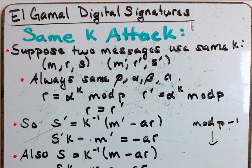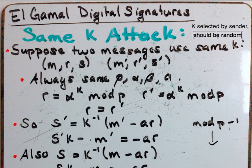Now if you recall, the K that is selected by the sender should be random. Remember it should be different each time they send a new message with a new signature.